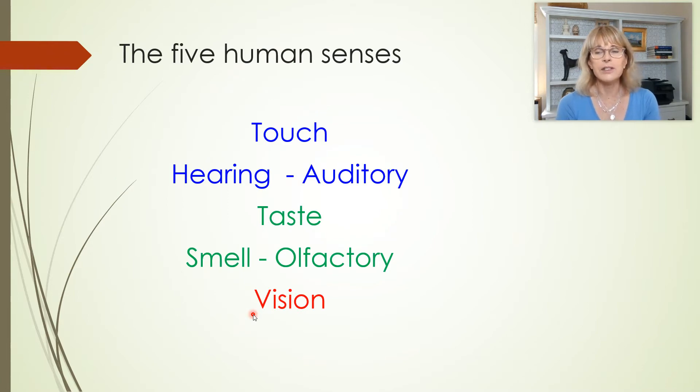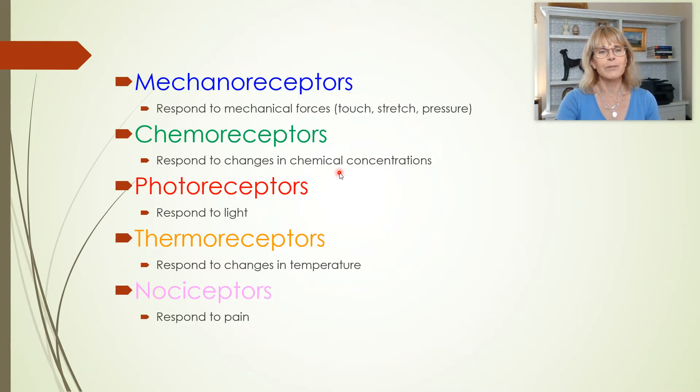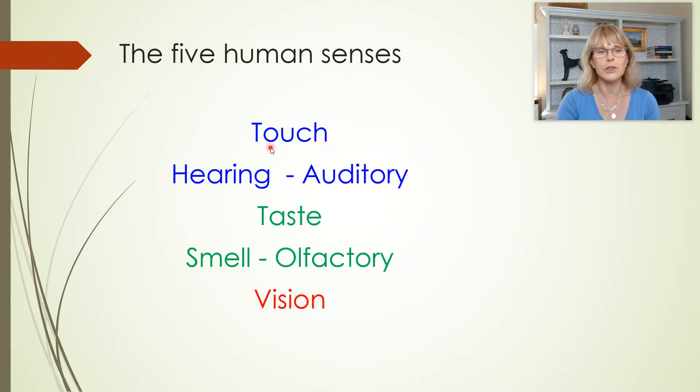Now, the five human senses are touch, hearing, taste, smell, and vision. And they're in different colors, and those different colors are not arbitrary. I've got touch and hearing here in blue because I wrote mechanoreceptors in blue. I wrote chemoreceptors in green, and it's true that your sense of taste and your sense of smell, these are both chemoreceptor senses. And then your sense of vision is a photoreceptor sense and is our only one that we know of.